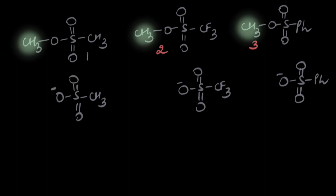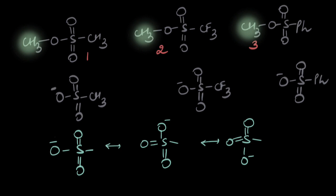I see O- attached to S double bond O double bond O in either case. And there is a possibility of resonance since the negative charge is alternate to the pi bond. So there is the same resonance happening in each case, wherein the negative is able to undergo conjugation with this oxygen and also with this oxygen. And we get these three resonating structures.